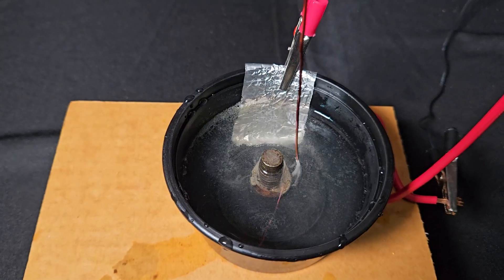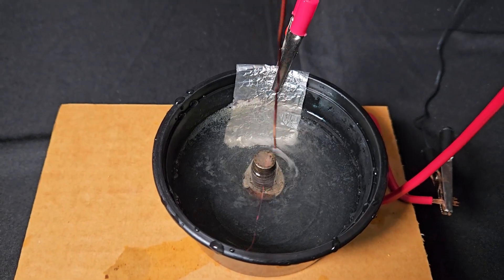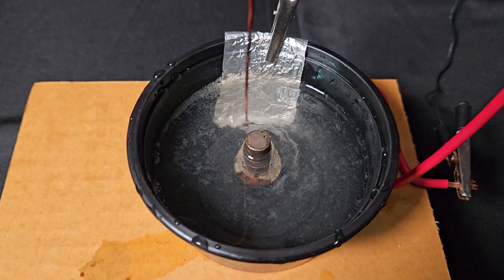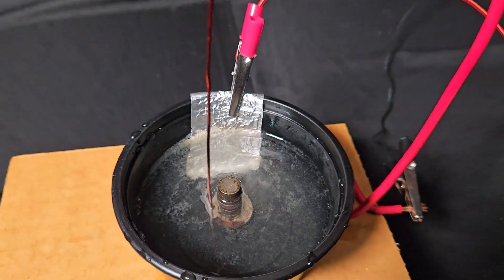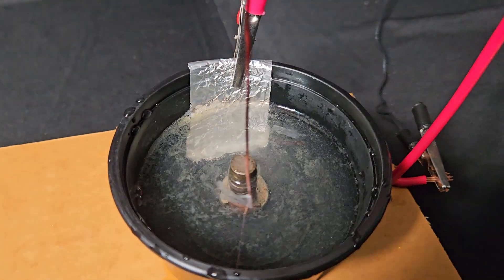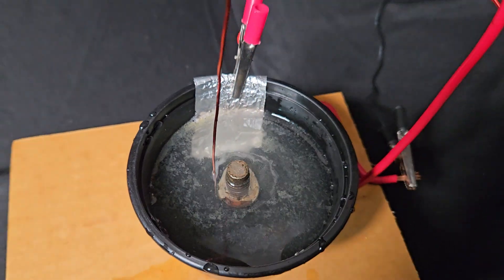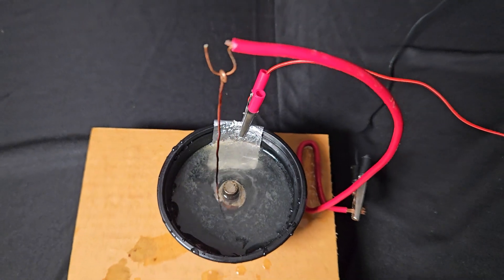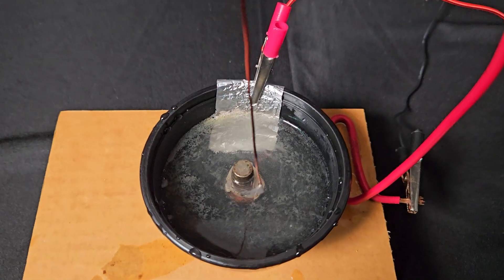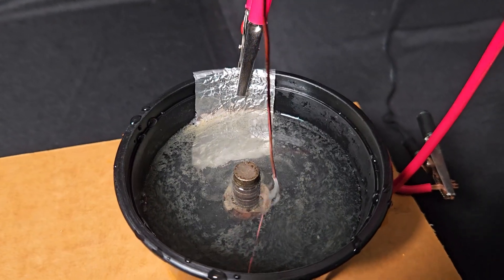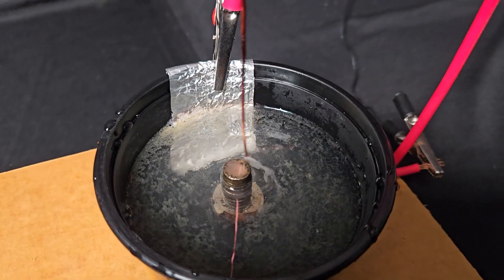This motor had no practical use but that was not intention of Michael Faraday. His intention was purely scientific. He just wanted to investigate the relationship between electricity and magnetism and create the rotational motion and he did it. This is the first electromagnetic motor in the world.